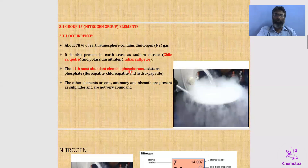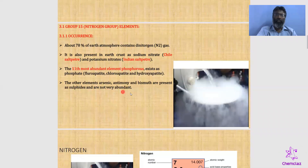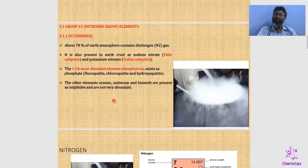Phosphorus occurs as fluoroapatite, chloroapatite, and hydroxyapatite. In addition to phosphorus, other group 15 elements — arsenic, antimony, and bismuth — are also present in the earth's crust in the form of sulfides, in tracer amounts only.